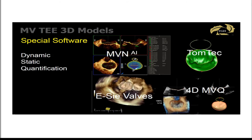Using specialized software for 3D models is an advanced skill — not always easy — but you can develop dynamic or static models for quantification. Few people in practice currently use 3D mitral valve modeling. The Phillips product is Mitral Valve Q and the GE product is 4D Mitral Valve, possibly renamed. These tools give us important information about mitral valve function.